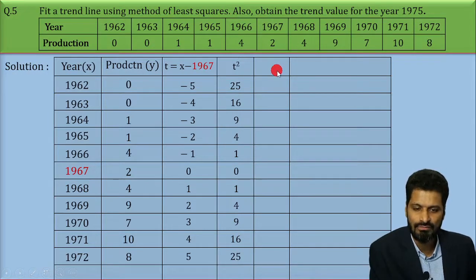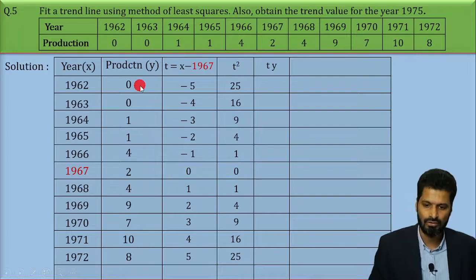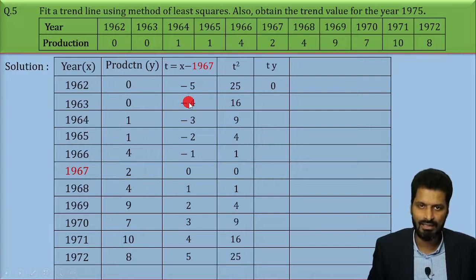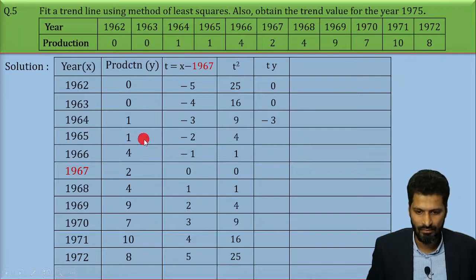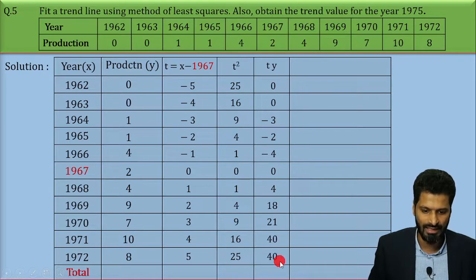In the next column, we have to find the value of t multiplied by y — that is, the product of column 2 and column 3. So: 0 × (−5) = 0, 0 × (−4) = 0, 1 × (−3) = −3, 1 × (−2) = −2, then −4, 0, 4, 18, 21, 40, and 40.